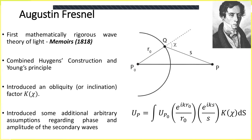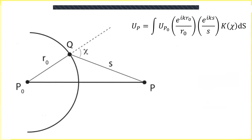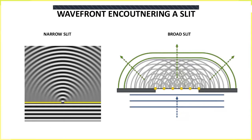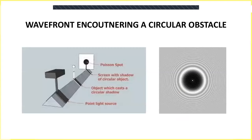Fresnel took Huygens' construction and Young's principle of interference, put both of them together, and came up with the Fresnel integral. What this represents is: you have a point source, a spherical wavefront, and a point P. You want to know how much of the field from a point P₀ actually reaches point P. According to Huygens' principle, every point on the wavefront makes some contribution, and according to Young's principle, every point produces wavelengths that interfere with each other. So it should be possible to add the contributions of every point on the wavefront to get a total sum at point P. This helped explain diffraction — how light bends around corners and forms a bright spot in the geometrical shadow.